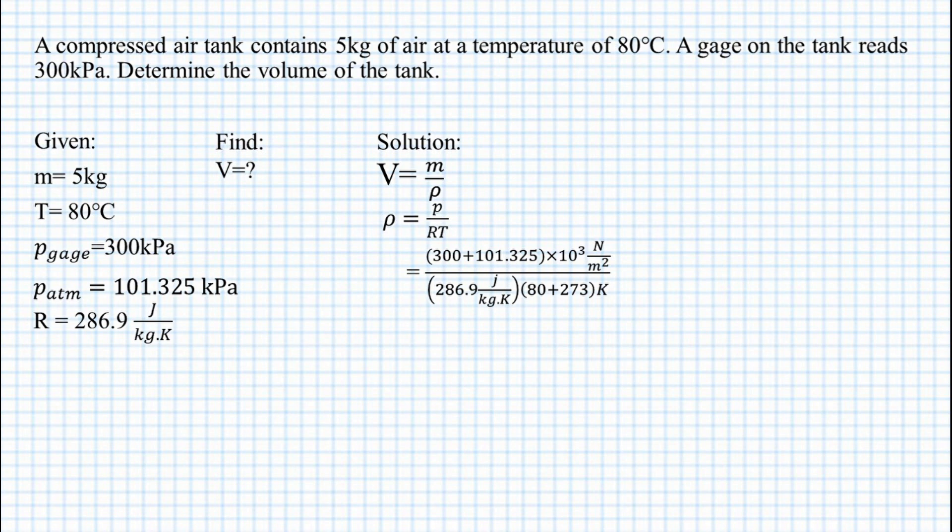We have 401,325 newton per meter squared over the value of our gas constant which is 286.9 joules per kilogram Kelvin, multiplied by the temperature which is 80 degrees Celsius, and we add 273 so we have the sum of 353 Kelvin. We have the value of density which is 3.96 kilogram per meter cubed.